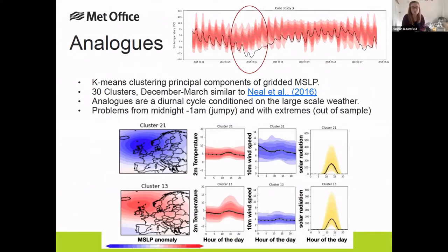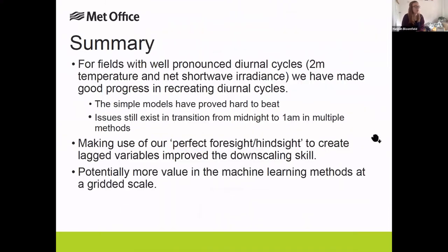We also looked at analog methods, which were probably the least promising of everything we looked at. We made analogs based on large-scale fields, but as seen in the case study, if an extreme event you're interested in didn't happen in the past, you have no way of capturing it with an analog. Because we picked extreme case studies to validate on, the analogs really struggled with this.